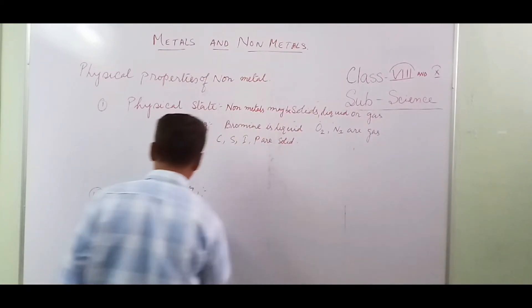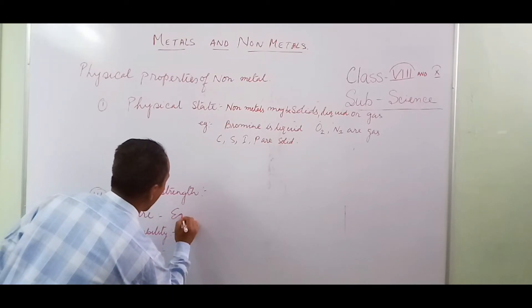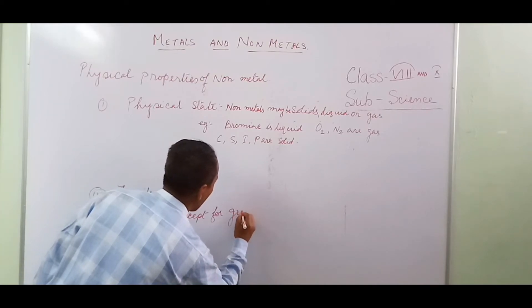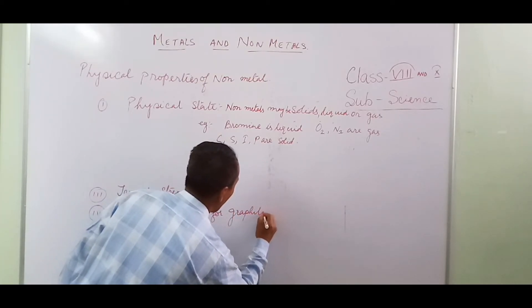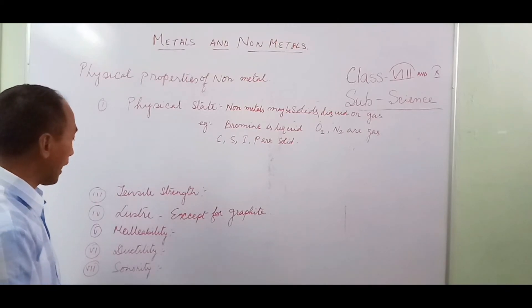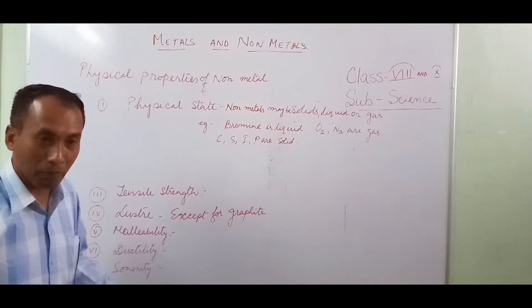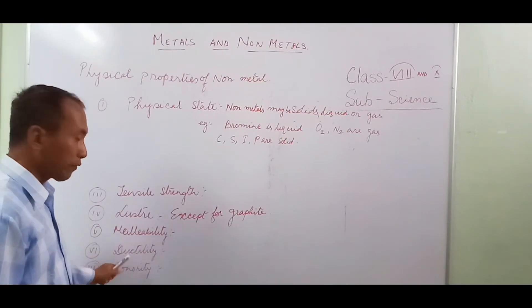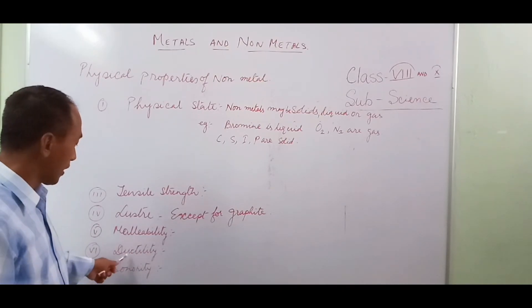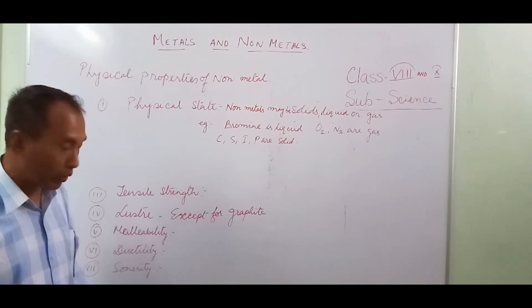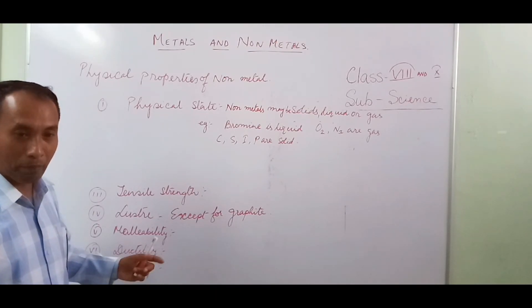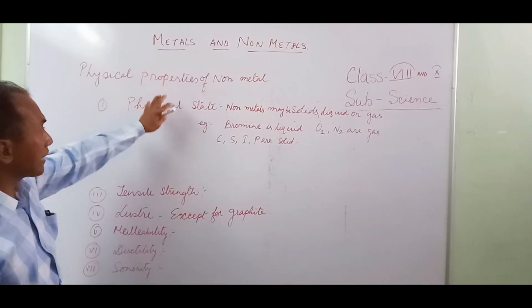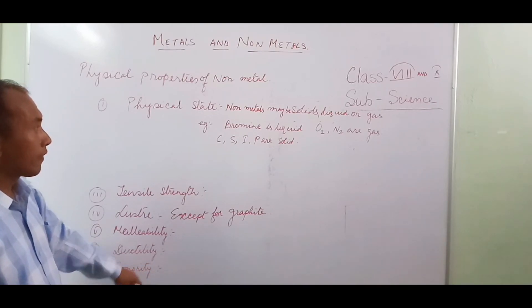Non-metals are non-lustrous except for graphite, which is a non-metal that is lustrous. Malleability does not arise because non-metals are brittle and cannot be converted into thin sheets. Ductility does not arise either, as they cannot be pulled into wires. Sonority also does not apply — being brittle, they cannot produce a ringing sound. So it is easy to remember properties of metals and non-metals together.